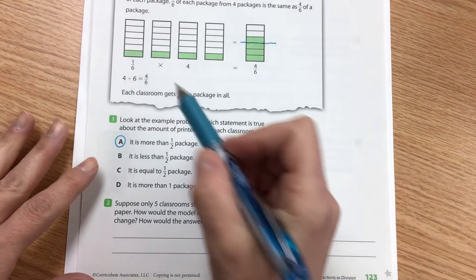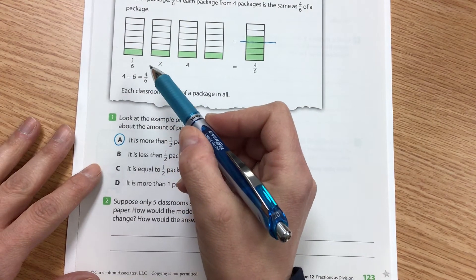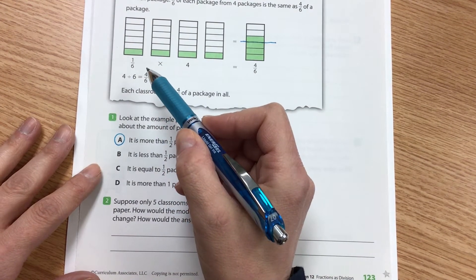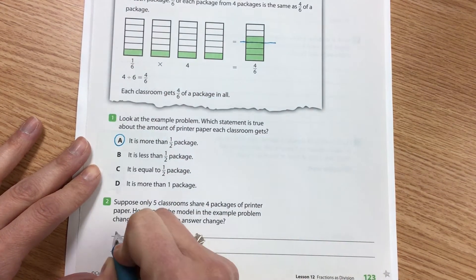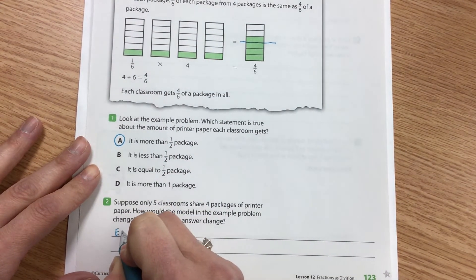Well, if we were dividing it by five classrooms instead of six, each rectangle here would be divided into five. So that's the first way it would change.